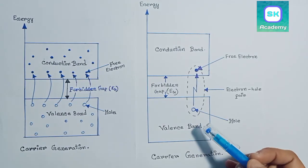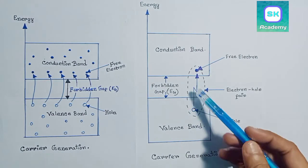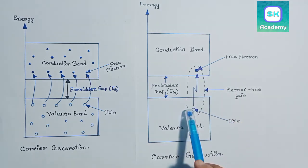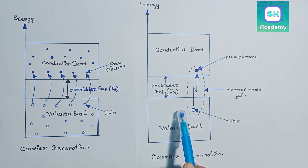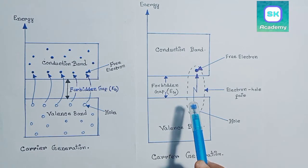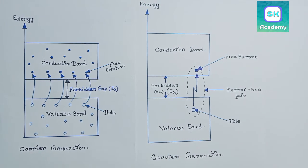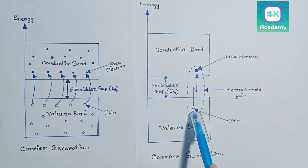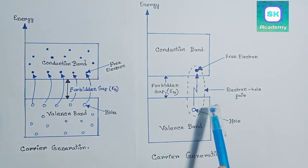So, in carrier generation, an electron-hole pair is generated. That's why this process is called carrier generation.